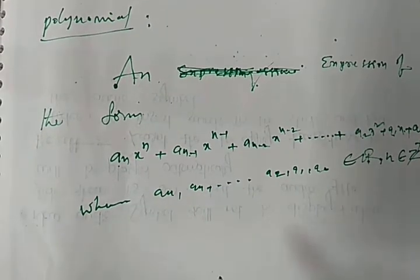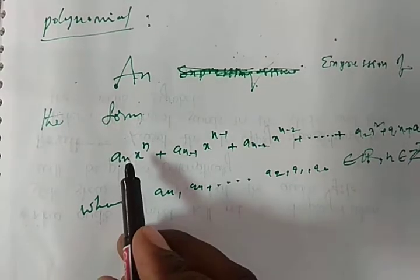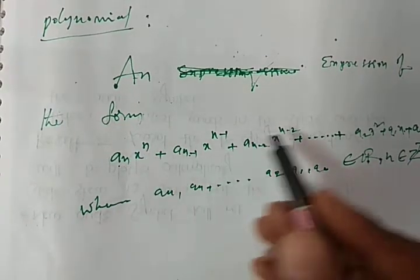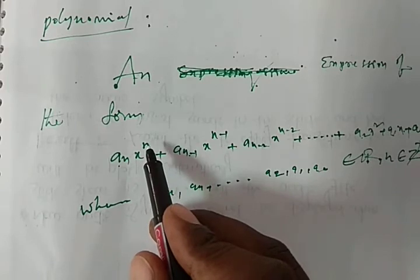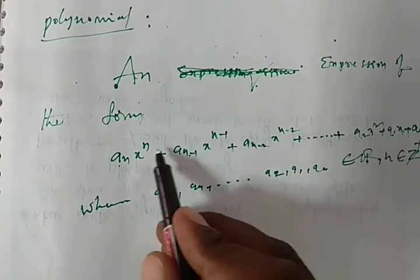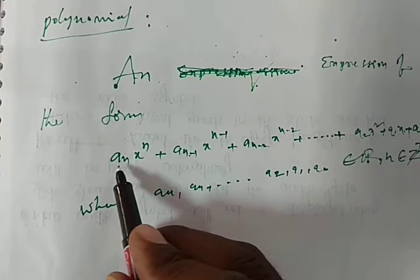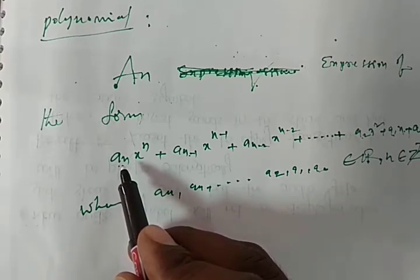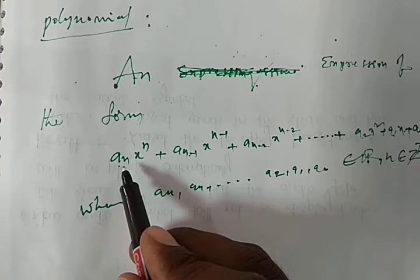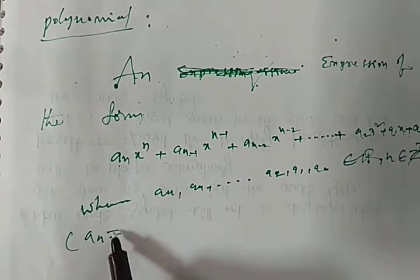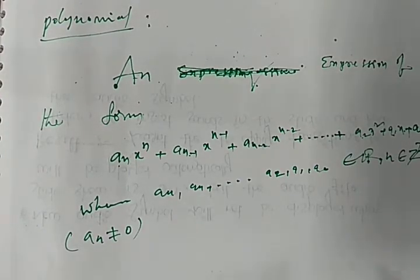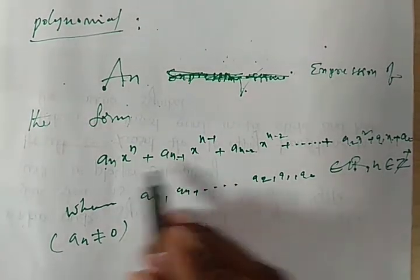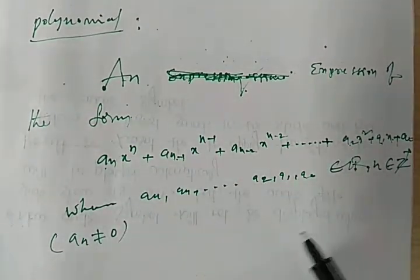Here we have to observe the leading coefficient. The maximum power is n, which is greater than n-1, so this is the maximum power and its coefficient is called the leading coefficient. To define the polynomial, this leading coefficient must not equal zero, and n must not equal zero. With these conditions, this type of expression is called a polynomial.